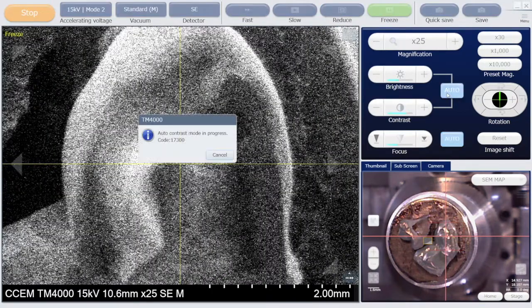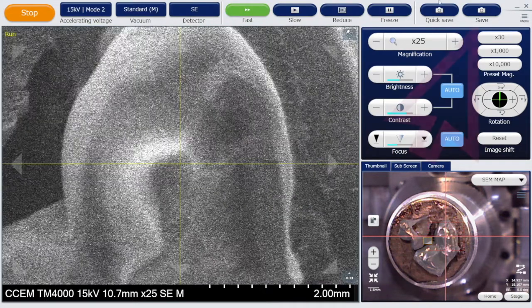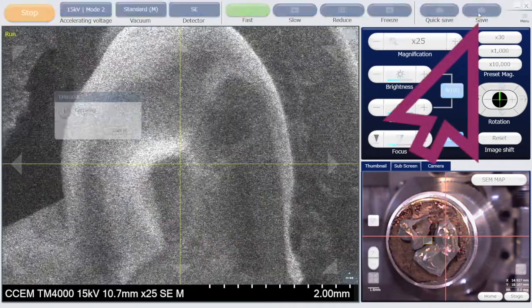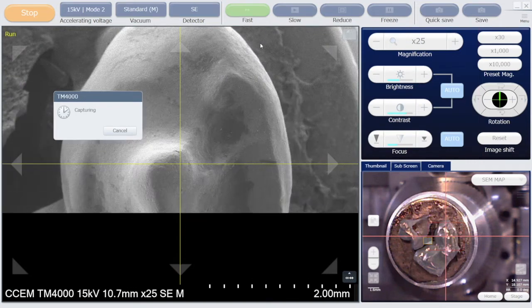First, find something near your area of interest that is easy to spot changes in. A great way to find this is saving an image at low magnification, finding the area of interest, and zooming in.